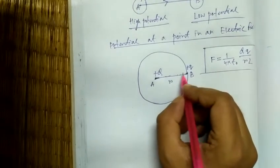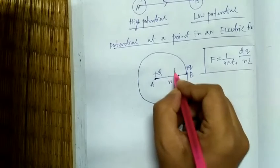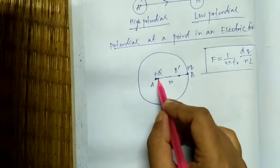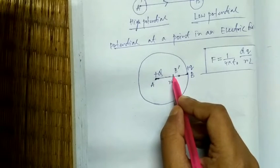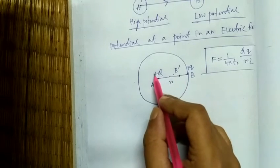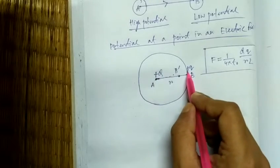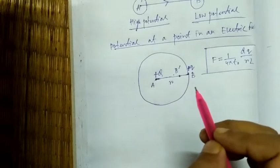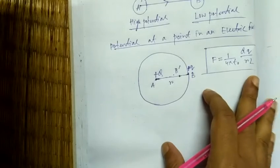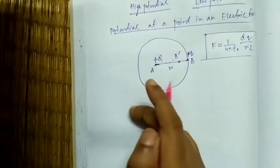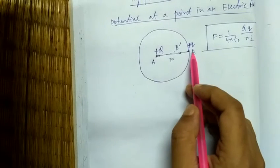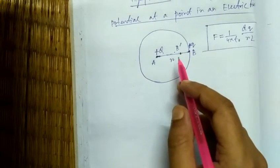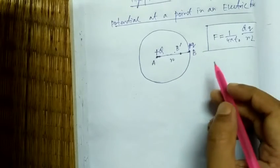If we displace this plus q charge from point B to point B-dash, work has to be done against this force, because when we take two similar kind of charges, the work has to be done against the electric field. But if we put a negative charge here, then the electric field will do a certain amount of work.